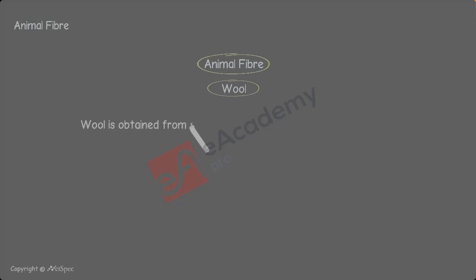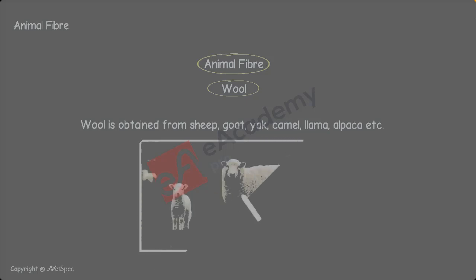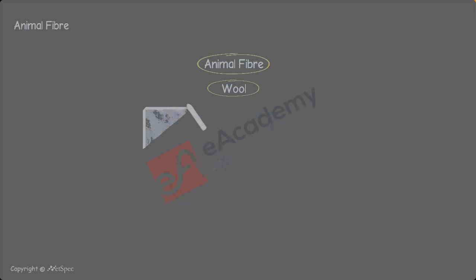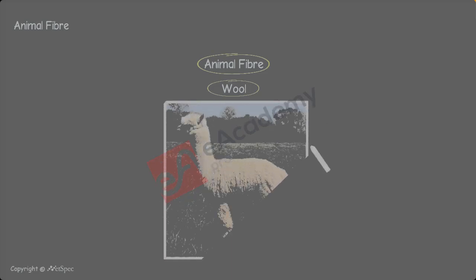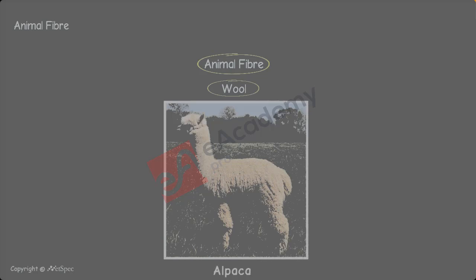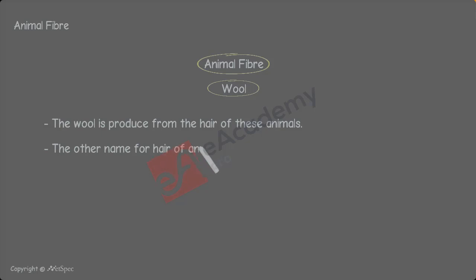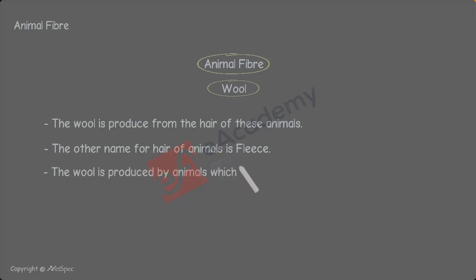Wool is the fiber which is produced from the following animals: sheep, goat, yak, alpaca, etc. The wool is produced from the hair of these animals. The other name for the hair of an animal is fleece. Wool is produced by animals which live in colder areas or climates.